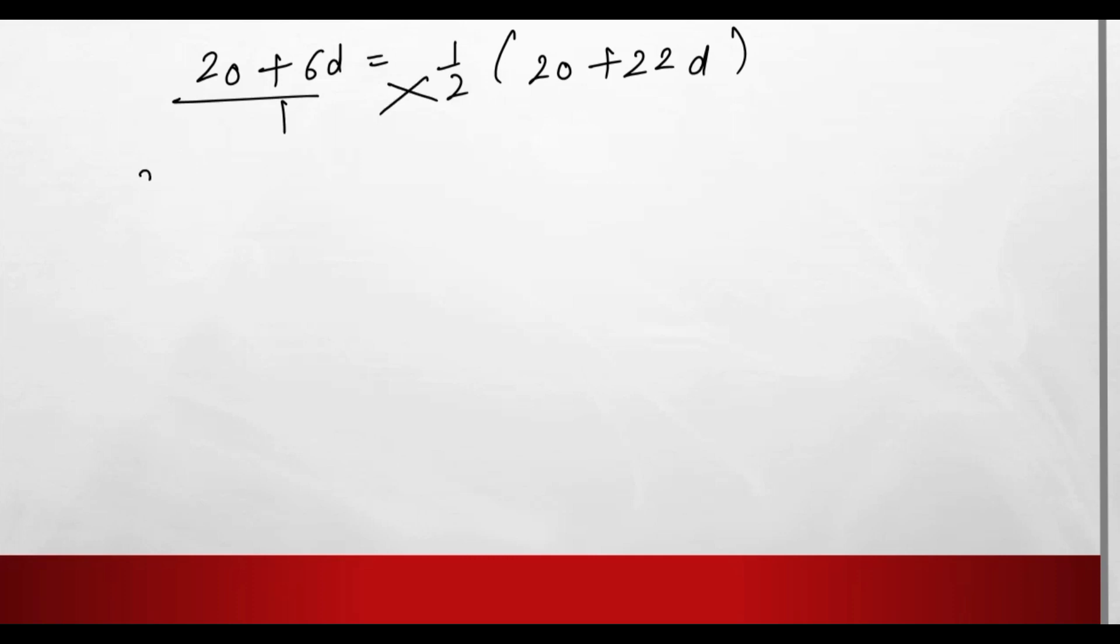After cross multiply we will write it as 2 × (20+6d) = 20+22d, 40+12d = 20+22d. 40 minus 20 which is 22d minus 12d.